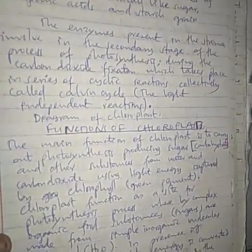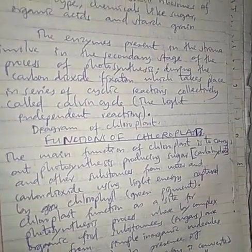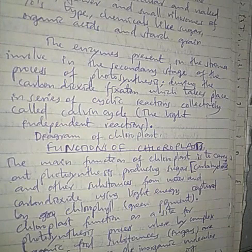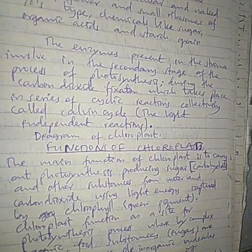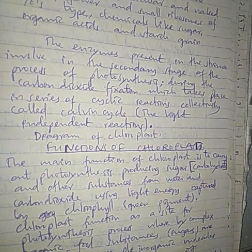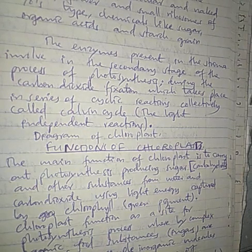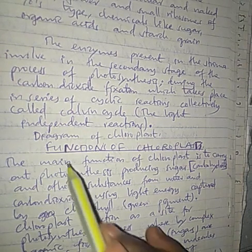The stroma also contains a few small ribosomes (70S type), chemicals such as sugars and organic acids, starch granules, and enzymes involved in the second stage of carbon dioxide fixation. All of these will be discussed in detail in the nutrition topic.